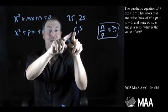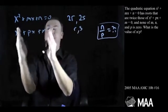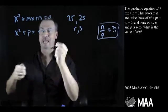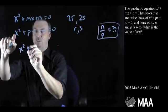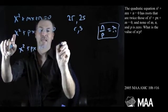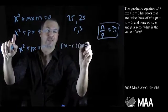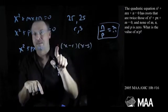If r is a root, then (x-r) is a factor. If s is a root, then (x-s) is a factor. So the second equation, x²+px+m, has factors (x-r) and (x-s), and there might be another number in front.